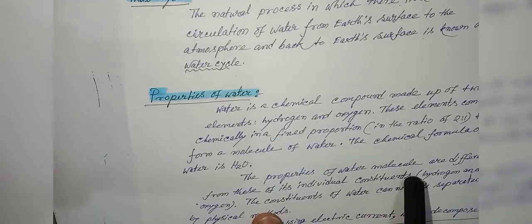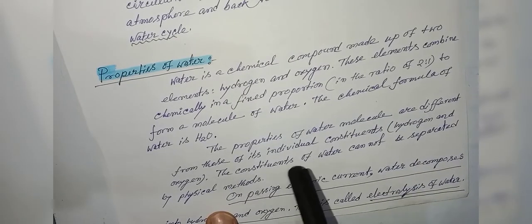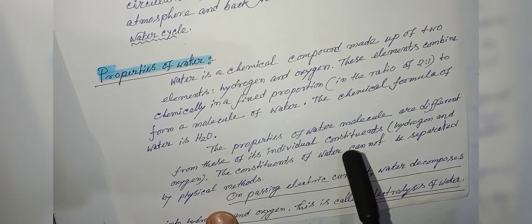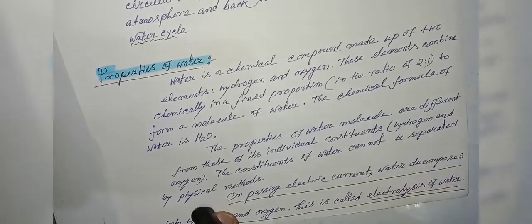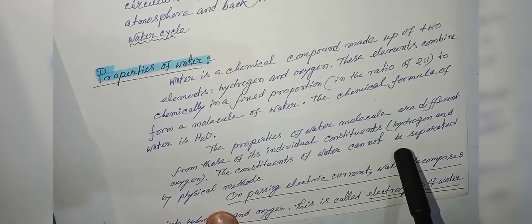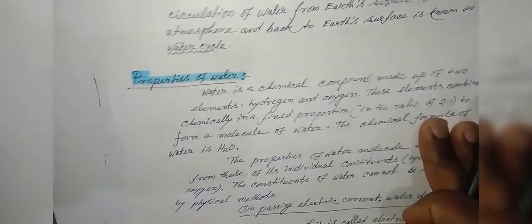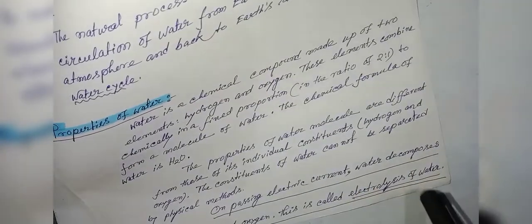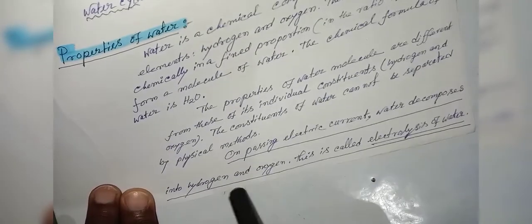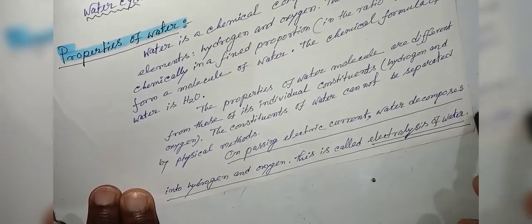The properties of the water molecule are different from those of its individual chemical constituents, hydrogen and oxygen. The constituents of water cannot be separated by physical methods. On passing electric current, water decomposes into hydrogen and oxygen. This is called electrolysis of water.